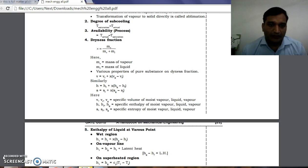Similarly, enthalpy: h equals h_f plus x times (h_g minus h_f). This is h_fg. Small h is denoted by specific enthalpy and capital H is denoted by total enthalpy.